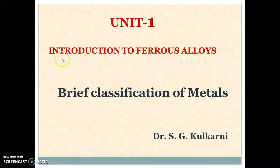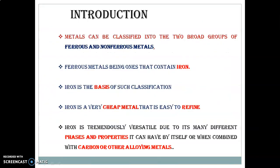So in this video lecture we are taking a small review on the brief classification of metals. Metals broadly are classified into two groups — one group is ferrous and another broad group is non-ferrous metals. Ferrous metals are the ones that contain iron. If iron is present, we consider that metal as ferrous. If iron is not present, then it is non-ferrous.